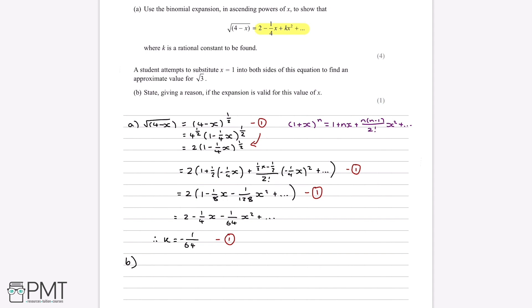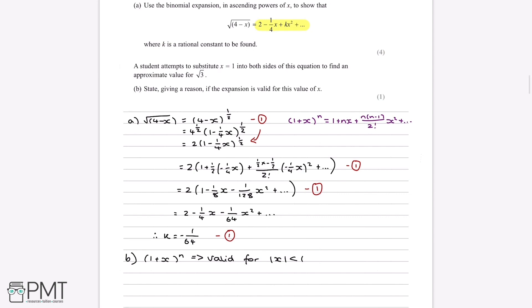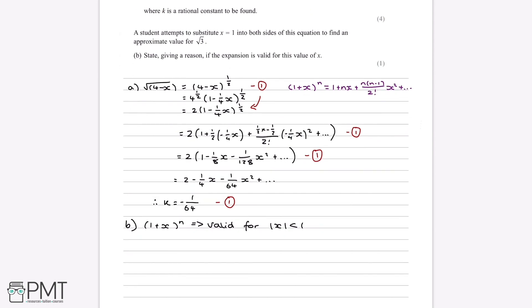So to find if an expansion is valid, using the general rule. So if we use when it's 1 plus x to the power of n, we can say that this, and this is a general rule, is valid when the modulus of x is less than 1. And this is just the general rule that we use to know if an expansion is valid.